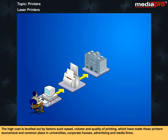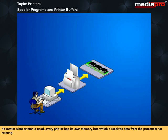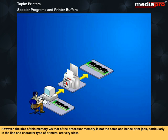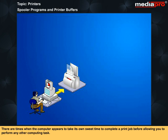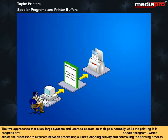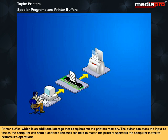No matter what printer is used, every printer has its own memory into which it receives data from the processor for printing. However, the size of this memory versus that of the processor memory is not the same and hence print jobs, particularly in the line and character type of printers, are very slow. There are times when the computer appears to take its own sweet time to complete a print job before allowing you to perform any other computing task. The two approaches that allow large systems and users to operate their PCs normally while the printing is in progress are: a spooler program, which allows the processor to alternate between processing a user's ongoing activity and controlling the printing process; and a printer buffer, which is an additional storage that complements the printer's memory. The buffer can store the input as fast as the computer can send it and then releases the data to match the printer's speed while the computer is free to perform other operations.